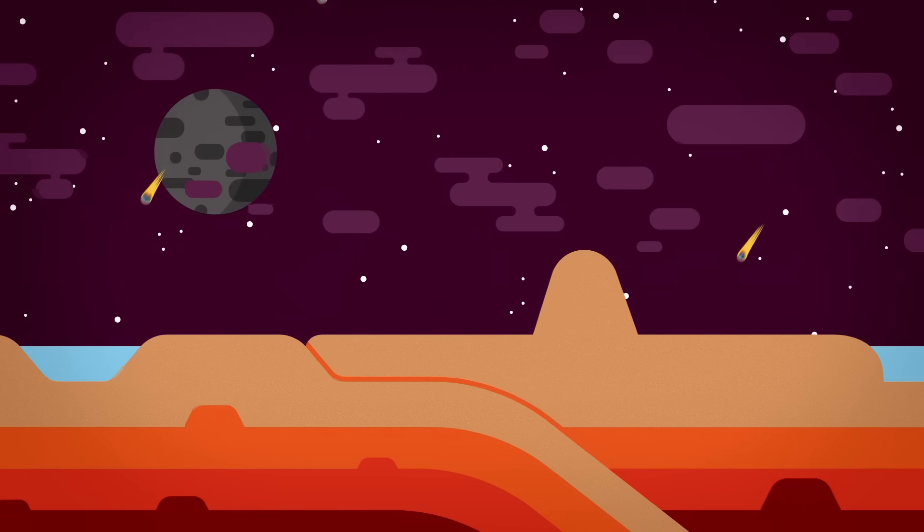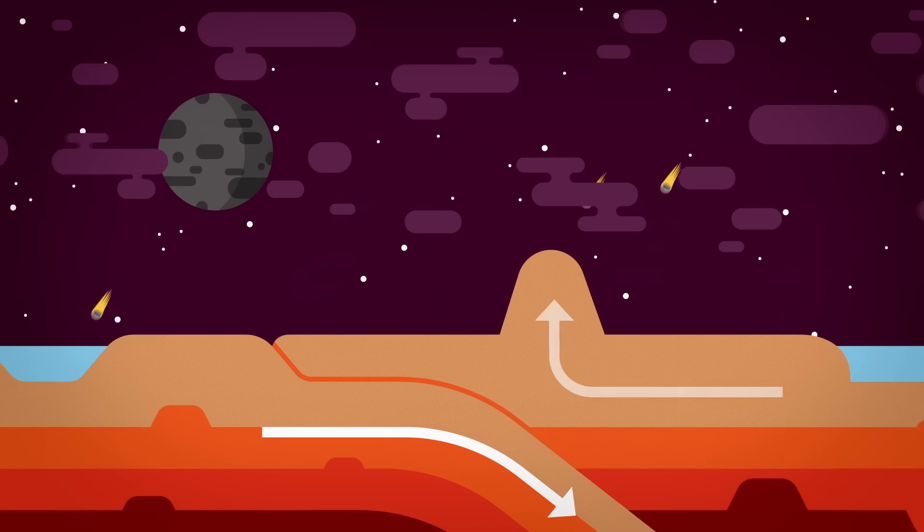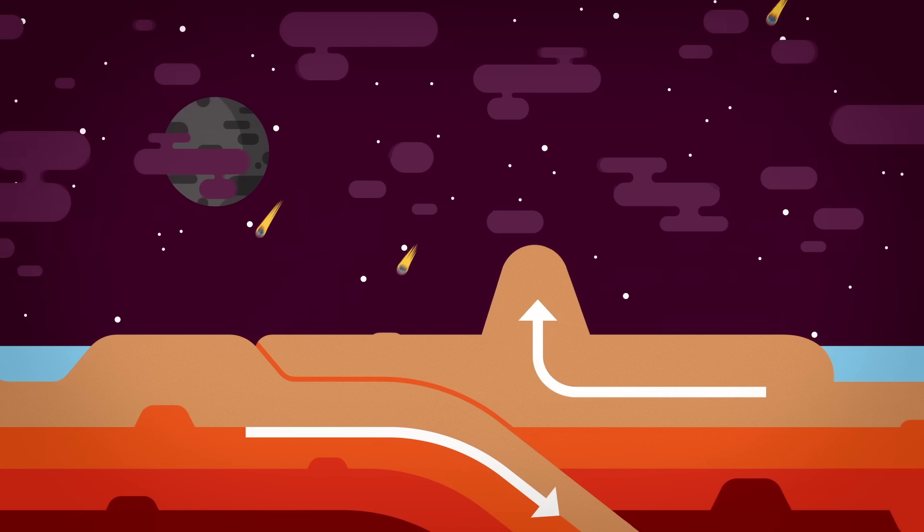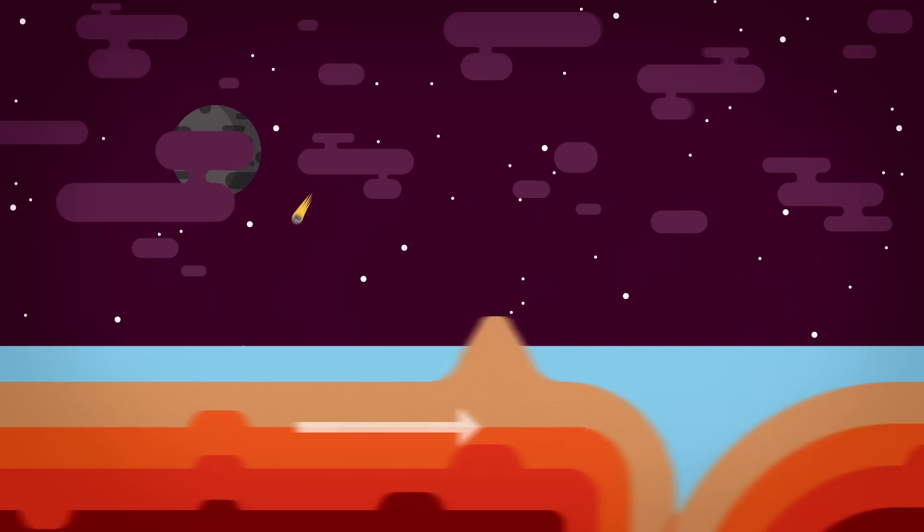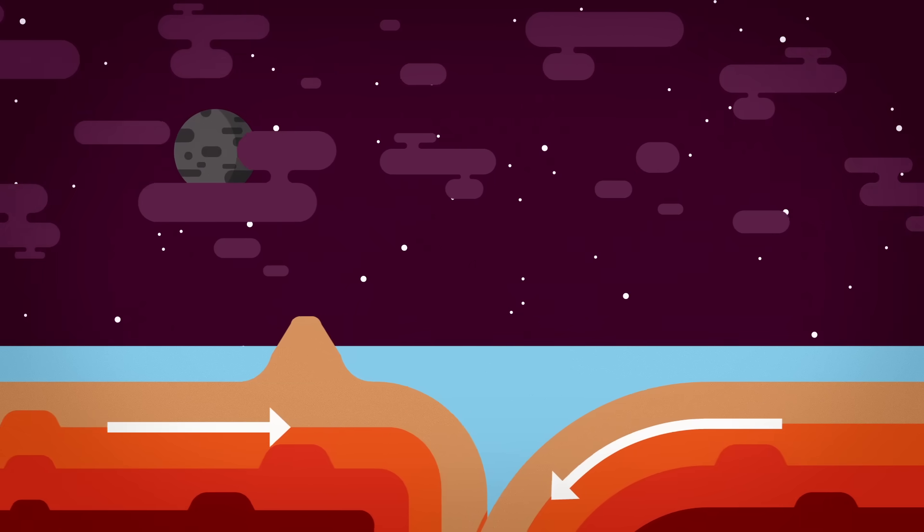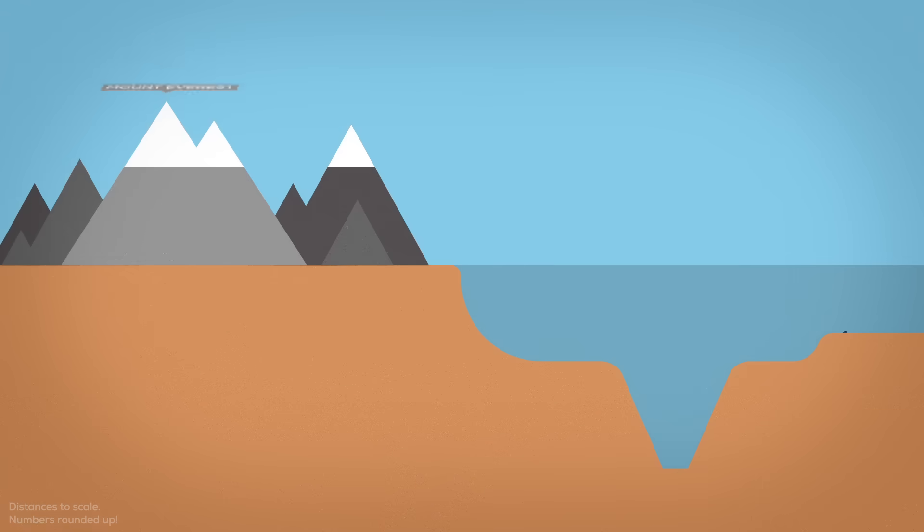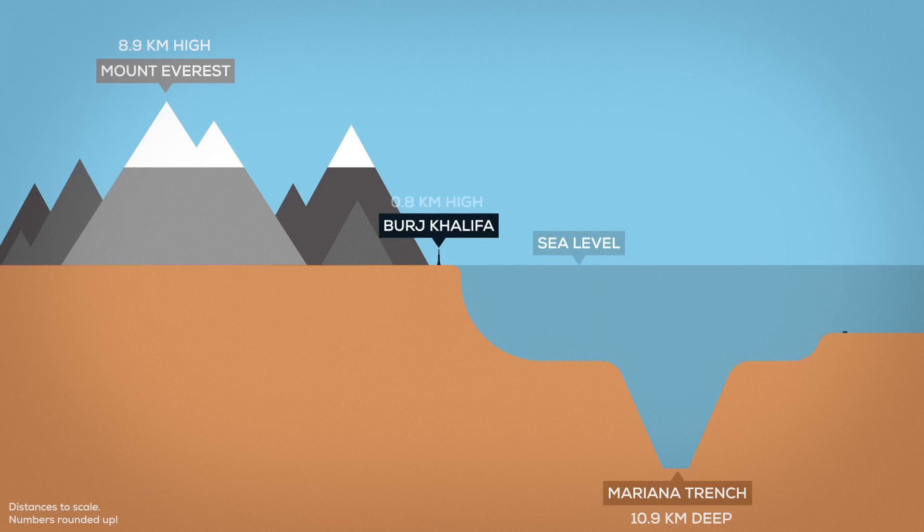For now, let's just say that the crust of Earth consists of separate giant plates that move around. As they meet, they crumble and create mighty mountains, or violently plunge back down deeper into Earth, creating deep trenches. That's the way the highest place on Earth was formed, Mount Everest, and the deepest, the Mariana Trench.